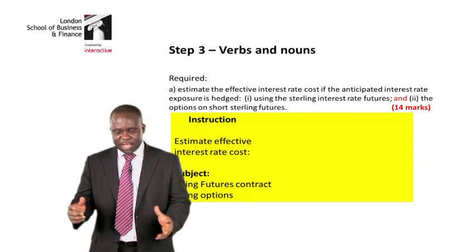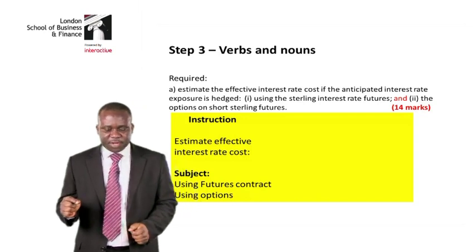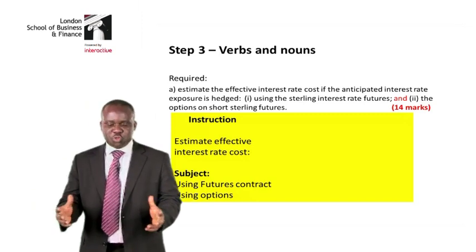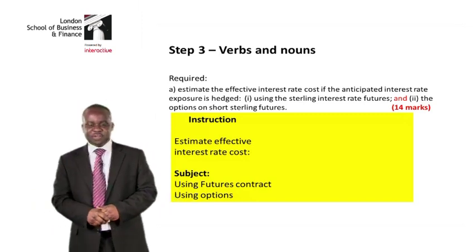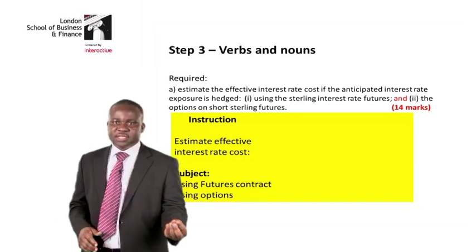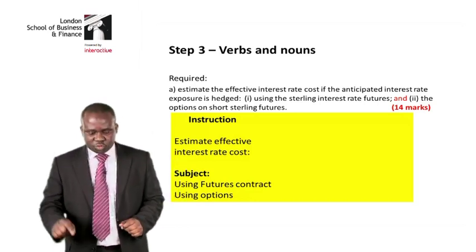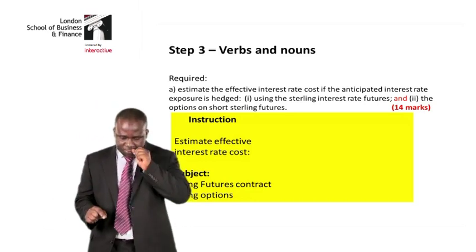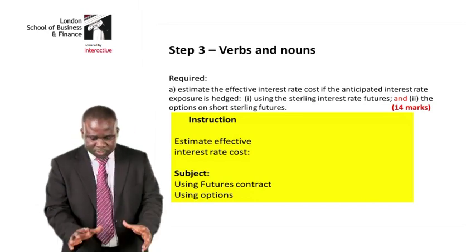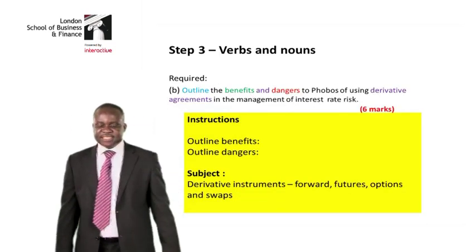What are you supposed to estimate? You are estimating the effective interest rate cost. And what will be the subject matter — what are you going to use? The question said you would use the futures contract and the options contract. So the subject matter relates to the futures contract and the options contract.